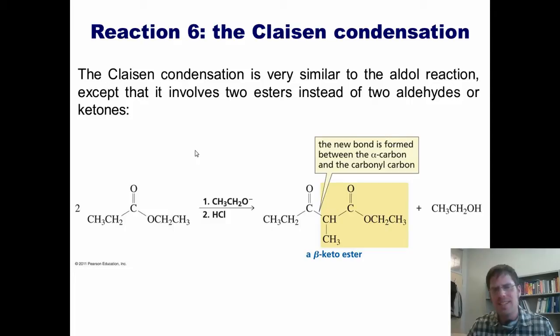The Claisen condensation is very similar to the aldol reaction, except that it involves two esters instead of two aldehydes or ketones. The product also looks very similar to an aldol product, except that it has a beta ketone instead of a beta alcohol.